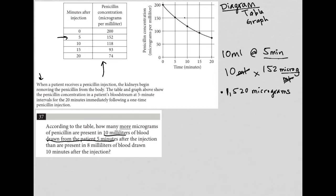The second scenario is 8 milliliters of blood at 10 minutes after injection. So going back to the table, at 10 minutes post-injection, we're at 118 micrograms per milliliter.